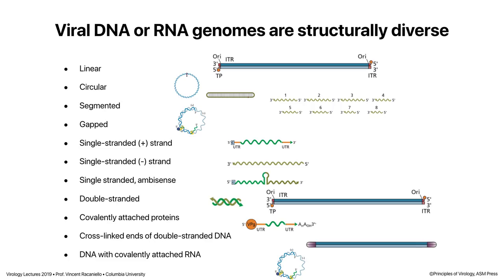We use specific colors for these nucleic acids on purpose: blue is DNA and green is RNA. We never use those colors for proteins — proteins are orange — so we don't confuse you. The two strands of each nucleic acid are colored differently: dark blue is the plus strand and light blue is the minus for DNA; bright green is plus strand and olive green is minus for RNA.